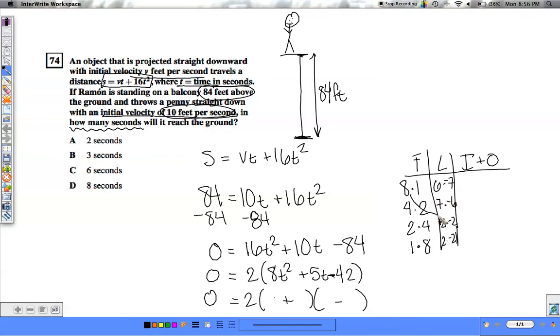So let's try 8 times 21, 1 times negative 2. 8 times 21 is 168. That's a far cry from the 5 that we're looking for. What about 8 times 2 and 1 times negative 21?